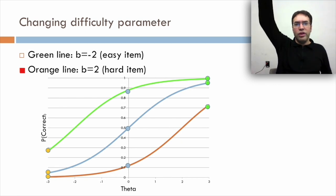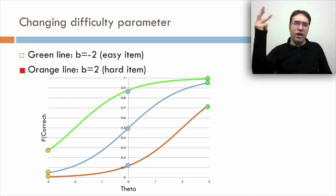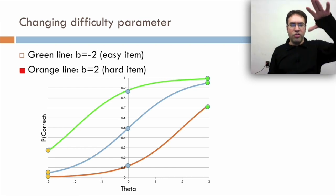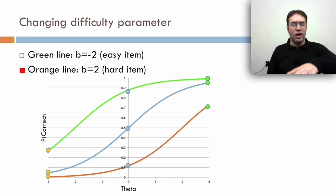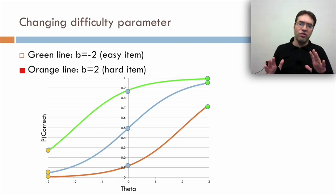The orange line is b equals 2, a hard item. Now the really good student with theta of 3 has only a 70% chance of getting it right. The student with theta of 0, the average student, is barely above 10% chance of getting it right. And the student with theta of negative 3, just no hope.